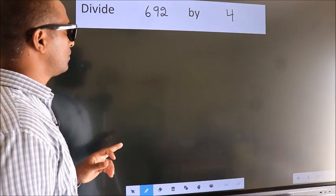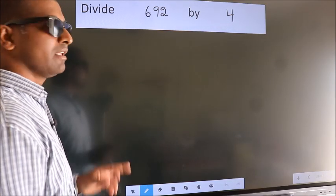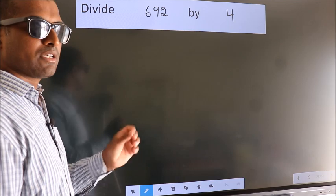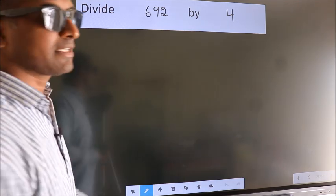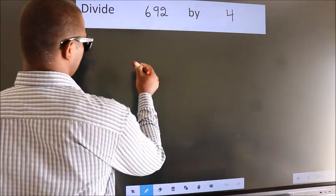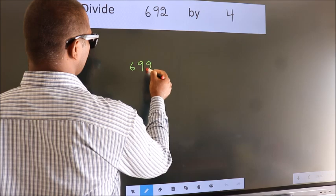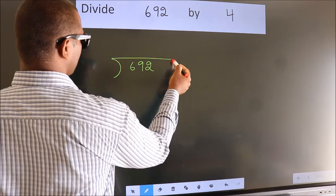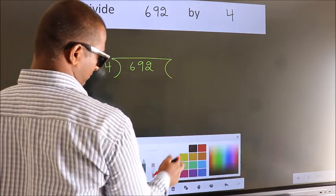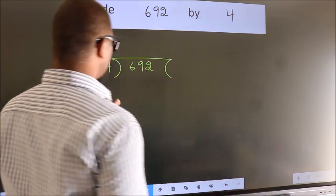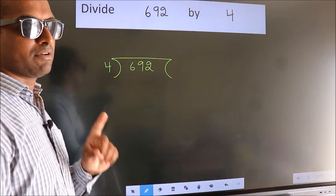Divide 692 by 4. To do this division, we should frame it in this way. 692 here, 4 here. This is your step 1.